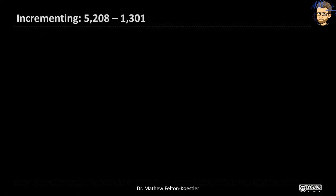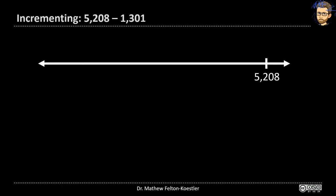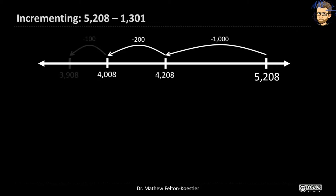Starting with incrementing, we're going to do the same problem multiple different ways today: five thousand two hundred eight minus one thousand three hundred and one. One way to think of subtraction is as a takeaway. We start with five thousand two hundred and eight and take away thirteen hundred and one. I might take away a thousand, then two hundred, then a hundred, and then one more, ending up with three thousand nine hundred and seven.